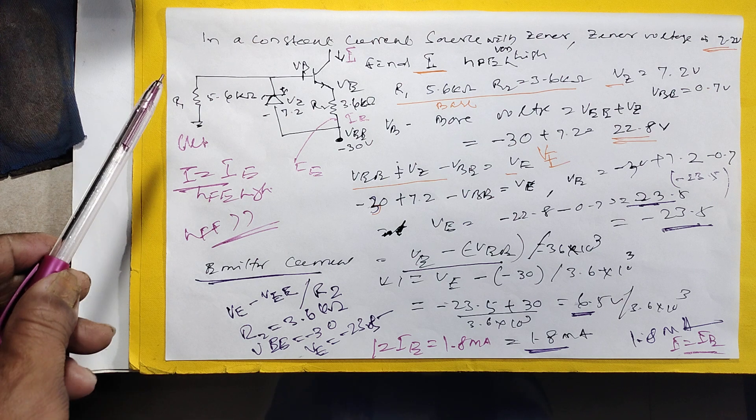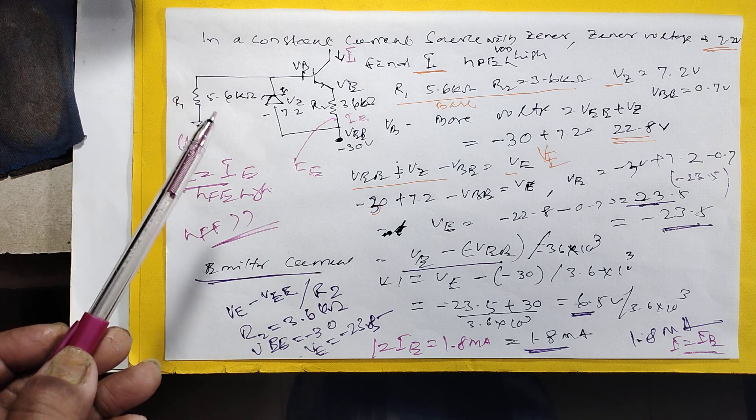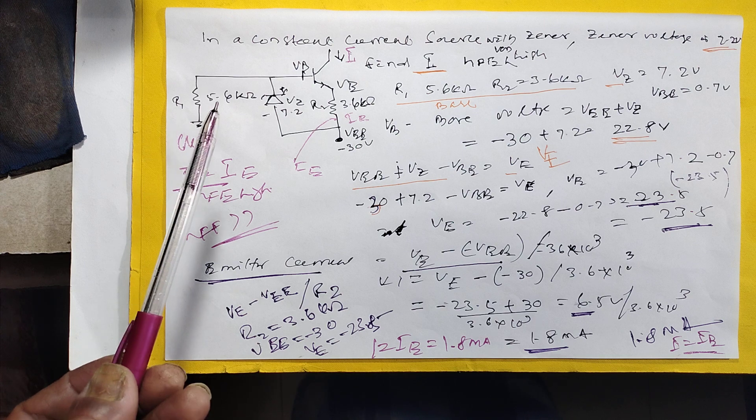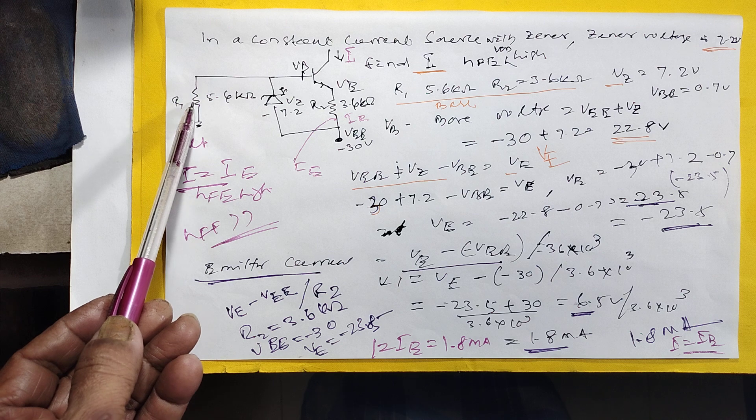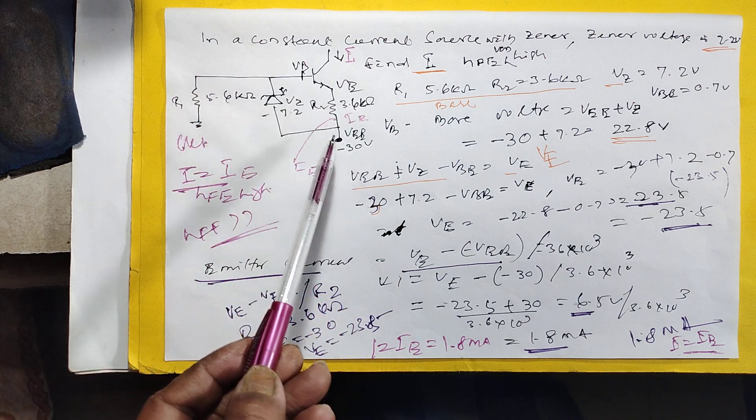In a constant current source with general diode, general zener voltage is 7.2 volt. Find I. This is 7.2 volt.